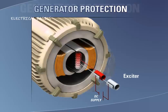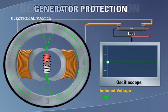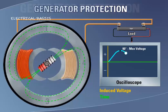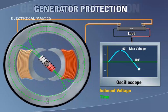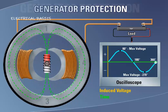A single-phase generator is composed of two major components: the exciter and the stator. The exciter is an electromagnet that rotates about its axis as shown. The stator is constructed from two electromagnets or poles wired in series to a load and, as the name implies, remains stationary. As the exciter rotates, its magnetic field cuts through the windings of the stator poles, inducing a voltage, and hence current, which will flow through the attached load as shown.